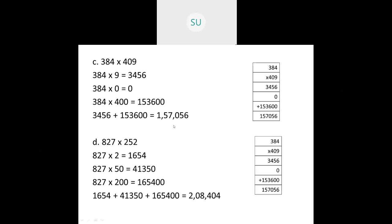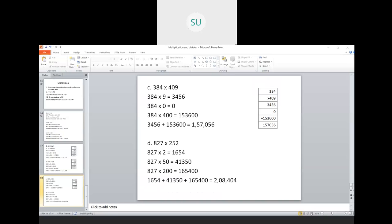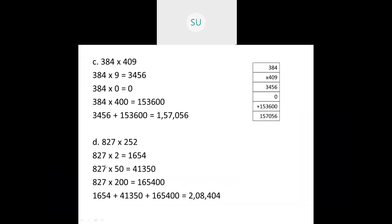Question 2D: 827 into 252. We multiply 827 by 2 to get 1,654. Then 827 into 50 gives 41,350. Then 827 into 200 gives 1,65,400. Adding 1,654 plus 41,350 plus 1,65,400 gives 2,08,404. This is how you do multiplication with 3 digit multipliers.